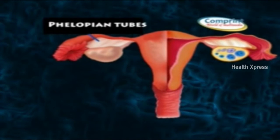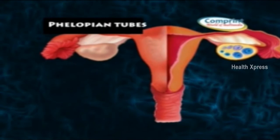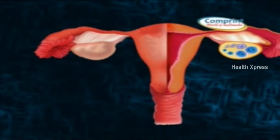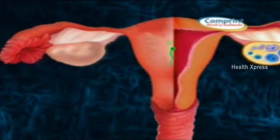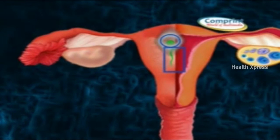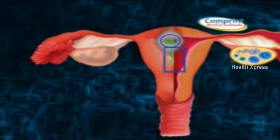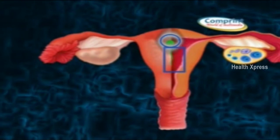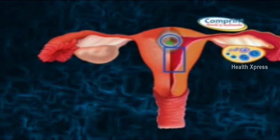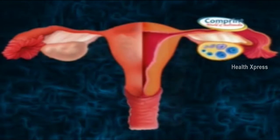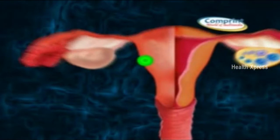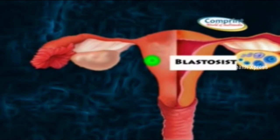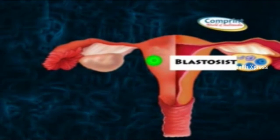Now, the fertilized egg — the zygote — passes down and reaches the wall of the uterus. Before reaching the uterus, the zygote has become a solid ball of cells called a morula. The morula cells move together and form a blastocyst, which then develops in the uterus wall and forms a baby.